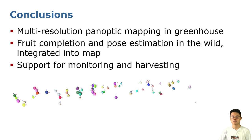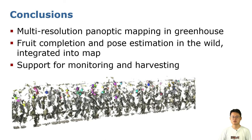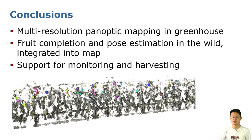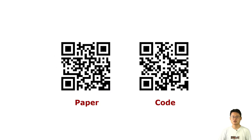In conclusion, we proposed a multi-resolution panoptic mapping system that can complete each fruit instance in the wild. We believe this mapping framework and map representation can be used for many downstream tasks like autonomous monitoring and harvesting in the greenhouse. We also released the code, so feel free to scan the QR code to try it out. Thank you very much for your attention.